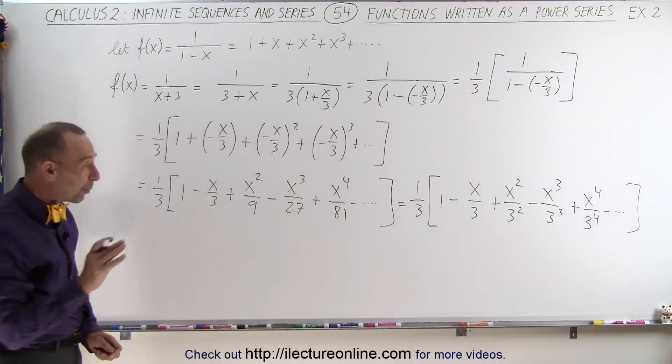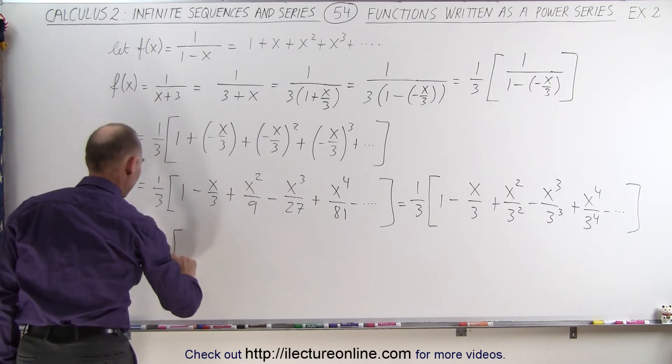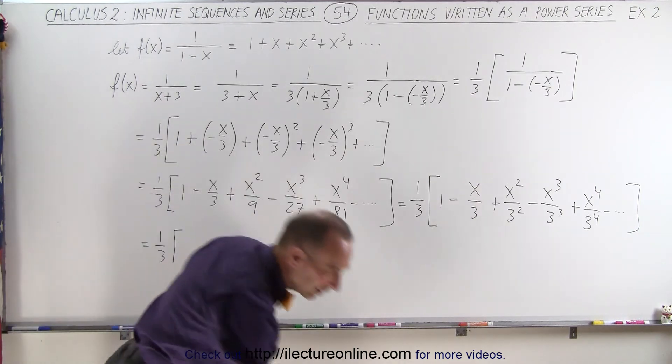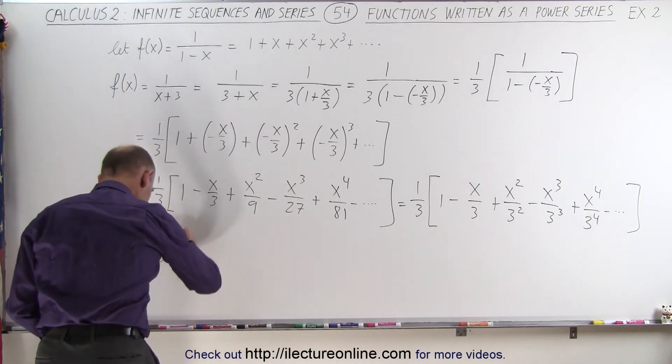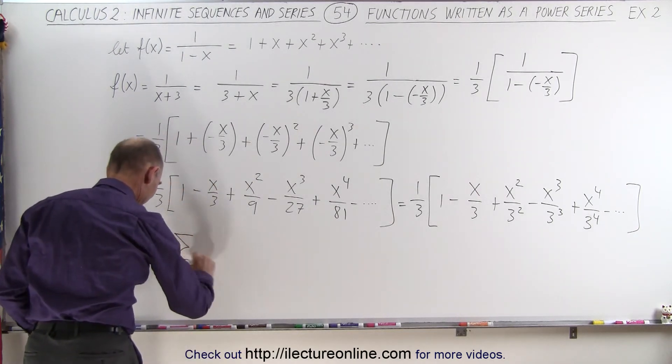Which means we can now write this as follows. This is equal to 1 over 3 times the infinite sum, and that's not a very good infinite sum symbol. Let's try this again. Infinite sum, much better,